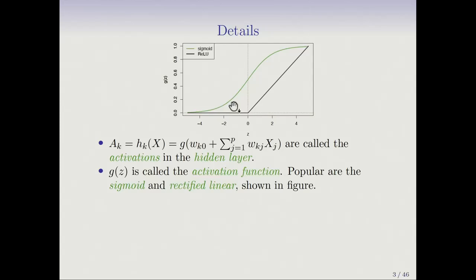The black one is the one that's more popular today. It's called a ReLU function, which stands for rectified linear unit. If Z is less than or equal to zero, it returns zero. After zero, it returns a linear function. So it basically truncates at zero. Since there's an intercept in each of these transformations, what zero on the Z scale can move around because of that intercept.